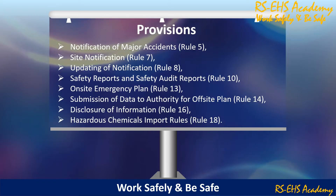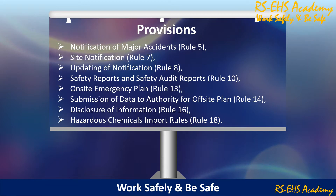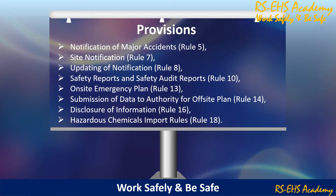Provisions in the rules include: Notification of Major Accidents (Rule 5), Site Notification, Updating of Notification, Safety Reports and Safety Audit Reports, On-site Emergency Plan, Submission of Data to Authority for Off-site Plan, Disclosure of Information under Rule 16, and Hazardous Chemical Import Rules.